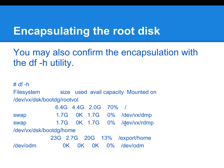Another way to confirm successful encapsulation of the root disk is to run the df -h command. I've done it and had to cut out a lot of information simply because it wouldn't fit on one page. Here we can see the root file system has been mounted on /dev/vx/dsk/bootdg/rootvol. We can also see that home vol has been mounted within the Veritas context.